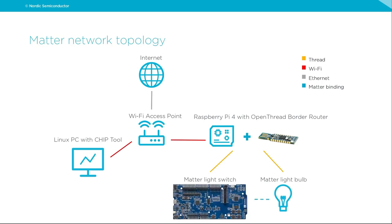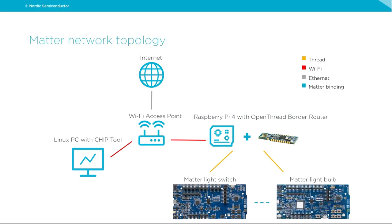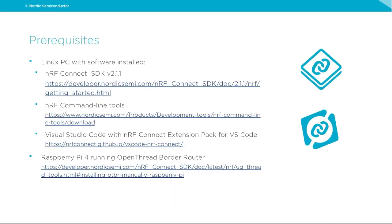As a Thread border router, we are going to use a Raspberry Pi 4 running the OpenThread border router service, using a Nordic NRF52840 dongle as a Thread radio coprocessor. The Matter light switch will be a Nordic dual-core NRF5340 development kit running the light switch application, and the Matter light bulb will be a Nordic NRF52840 development kit. Both kits are capable of communicating over Thread and Bluetooth LE protocols in parallel.